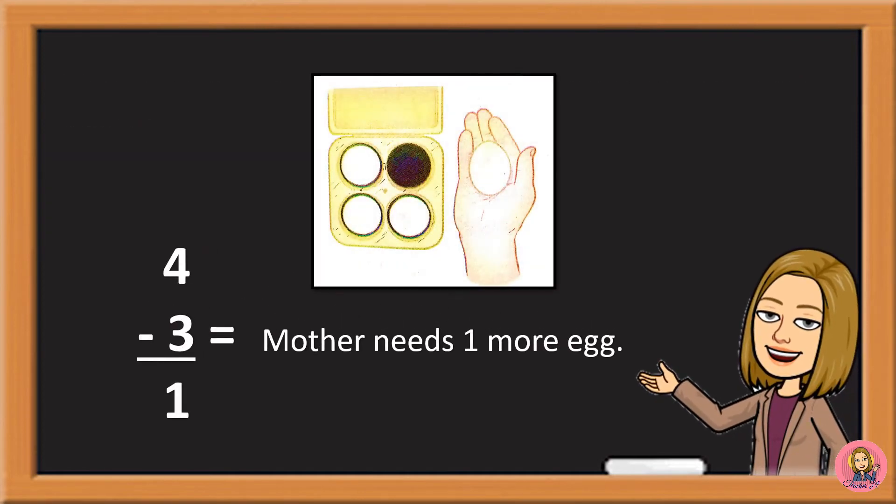So 4 minus 3 is equal to 1. Mother needs 1 more egg.